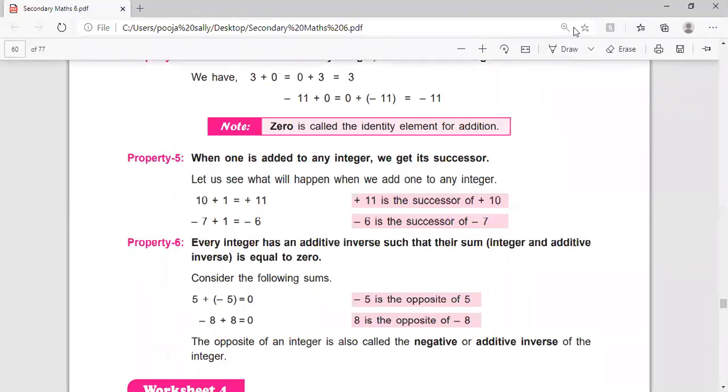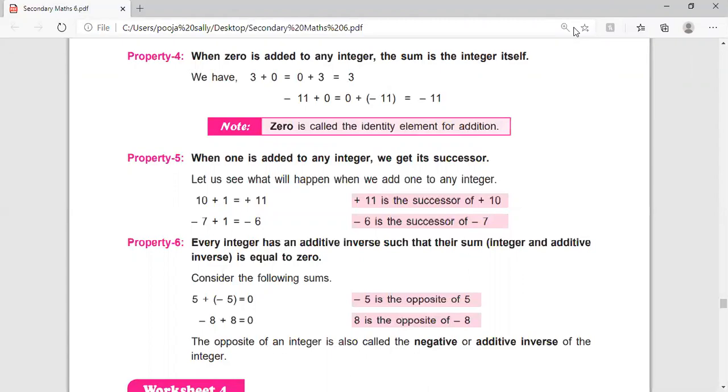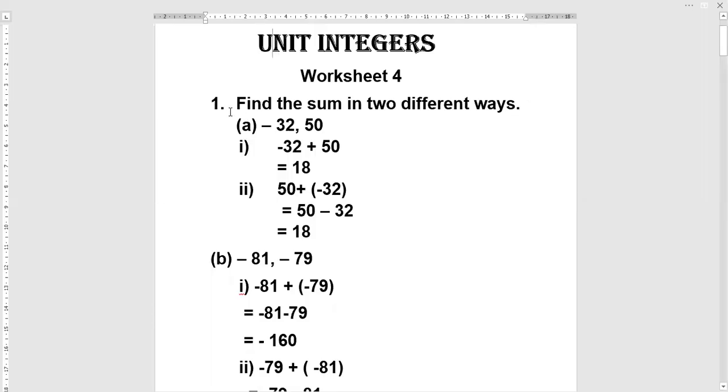On the basis of these properties, we will do the worksheet 4. Worksheet 4, first sum is find the sum in two different ways. Here two integers are given.